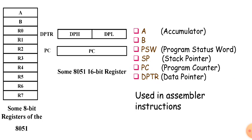The next one is the Data Pointer. The Data Pointer is a 16-bit register used to store 16-bit data. Sometimes we can use the Data Pointer as two 8-bit registers, referred to as DPL (Data Pointer Lower) and DPH (Data Pointer Higher).